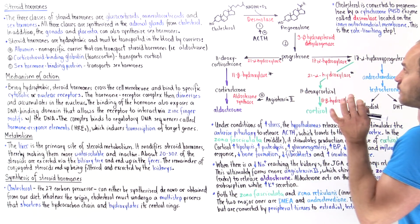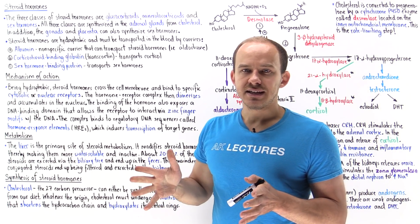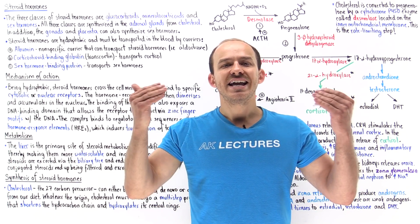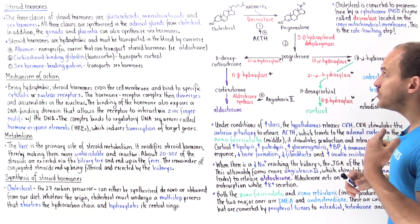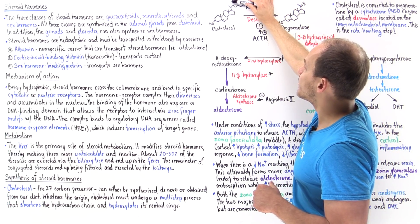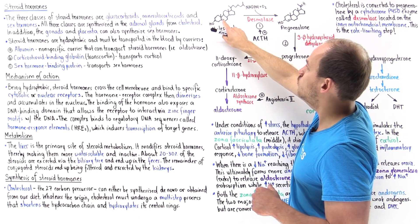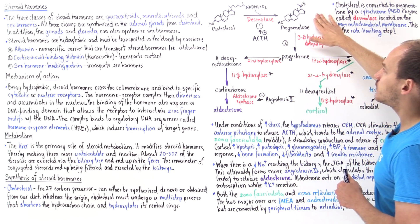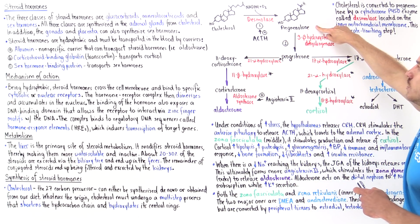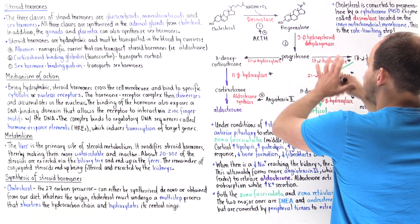The first step is the rate-limiting step, catalyzed by an enzyme known as desmolase. Desmolase is a cytochrome P450 mixed function oxidase located on the inner mitochondrial membrane, and it utilizes the reducing power of NADPH and diatomic oxygen to remove six carbons from the hydrocarbon chain, add an oxygen atom, and remove a bond. This converts the 27-carbon cholesterol molecule into a 21-carbon molecule known as pregnenolone, which can then proceed via three pathways.